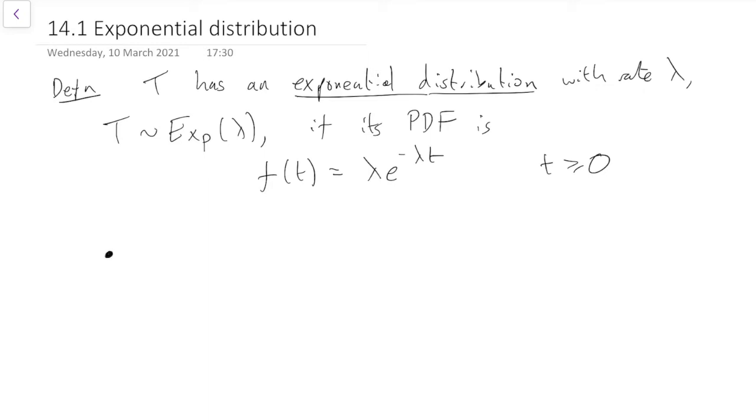First fact is once you've got the PDF you can also find the CDF the cumulative distribution function either by remembering it from last year or by integrating the PDF and it turns out that capital F(t) which is the probability it's less than or equal to is 1 - e^(-λt). That's easy to prove or you might remember it from last year.